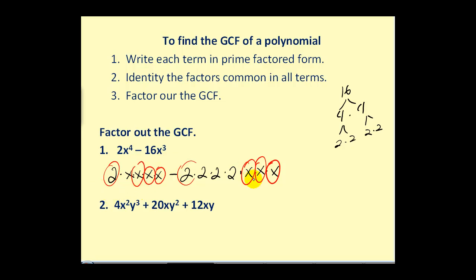So, what we've circled in each term is what they have in common, which gives us the greatest common factor of 2x cubed. So, we can rewrite this expression in factored form as 2x cubed times x minus 8. If we want to check this, we can just distribute and see that it does match the original expression.